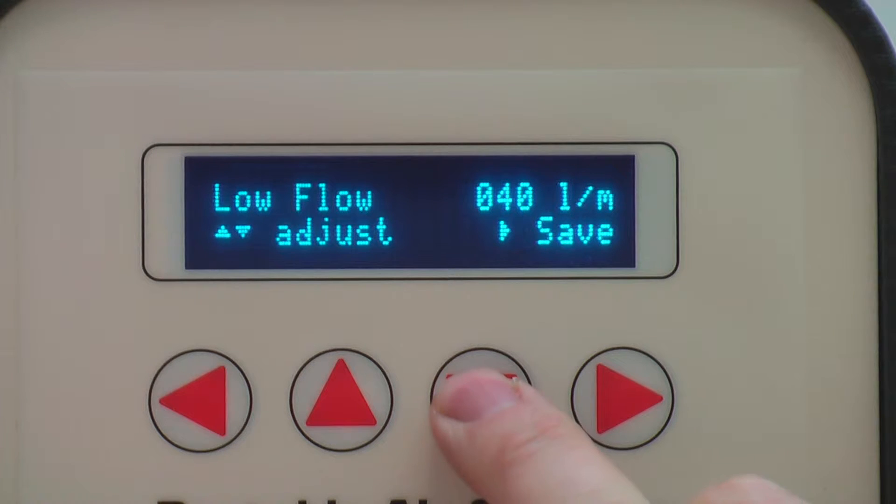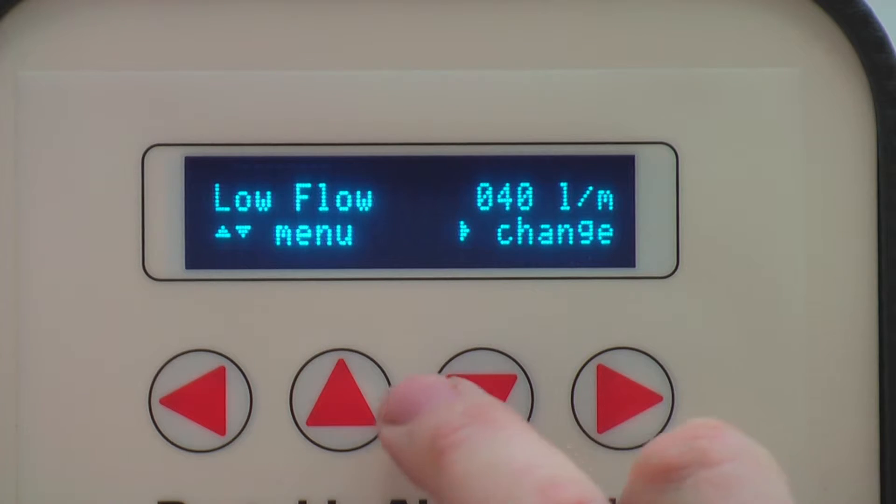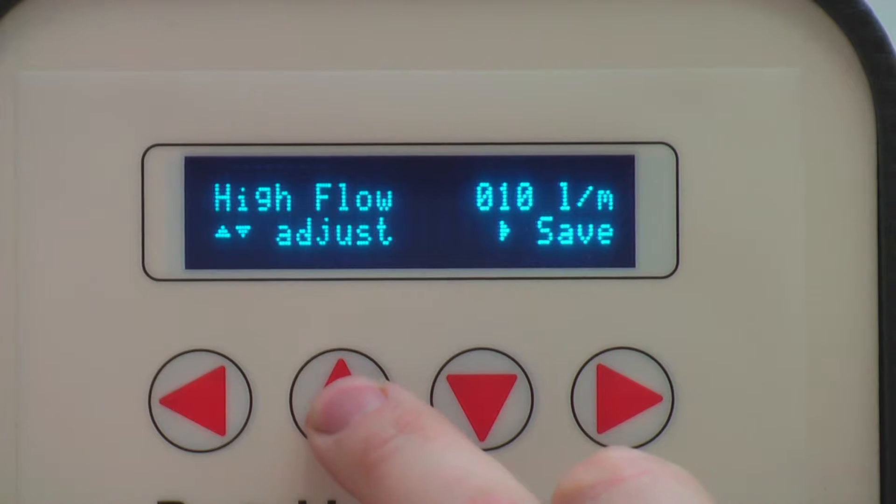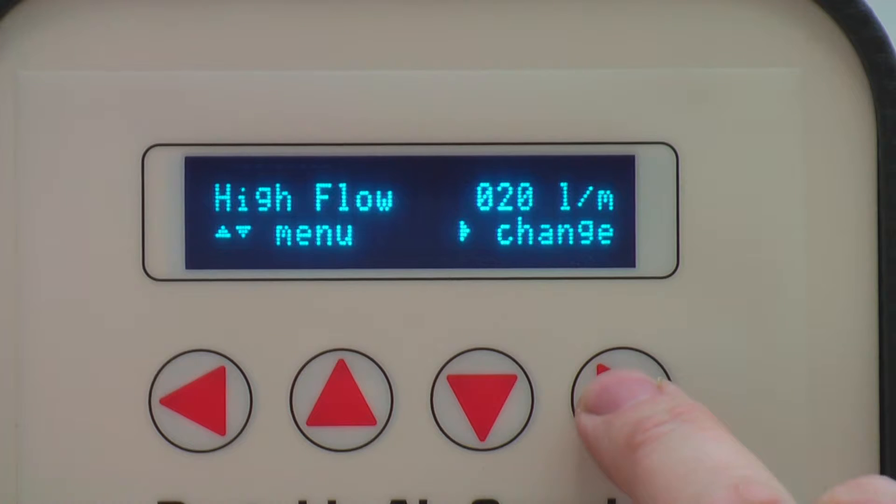When happy with your flow, press right again to save your new flow rate. Pressing down will take you to the high flow settings. This is the maximum flow which can be recorded before an alarm will sound. As before, pressing right will allow you to change the flow rates and you can increase or decrease the flow set point by pressing up or down arrows respectively. Save by pressing the right arrow key.